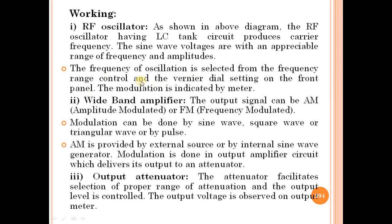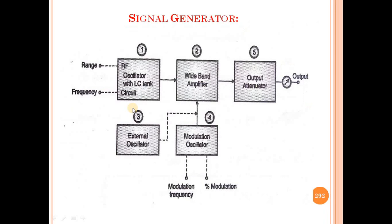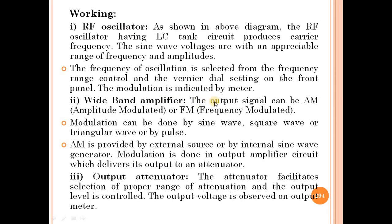The range of oscillation is indicated by the meter, which shows the modulation. This is the RF Oscillator. The second block is the Wide Band Amplifier. The output signal can be amplitude modulated or frequency modulated.